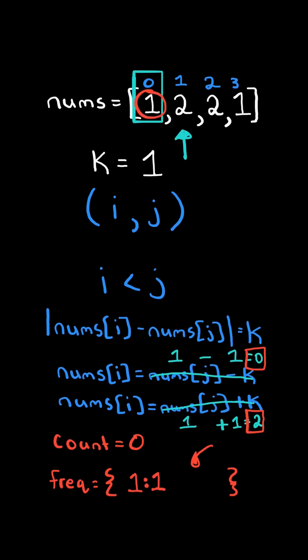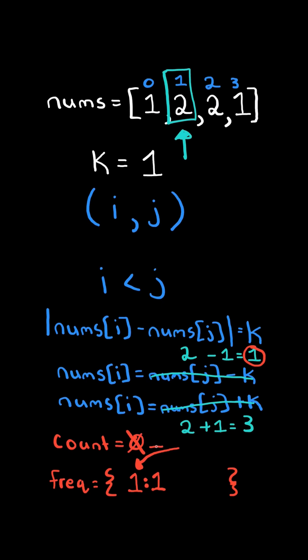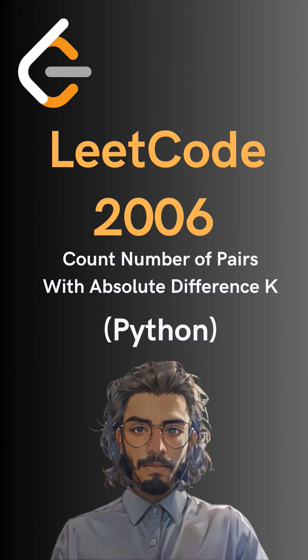And we continue. We calculate the current number plus k and minus k, and one of those results exists in the map, so we add its frequency to the count. And we add the current number to our dictionary. And here's the code to do so.